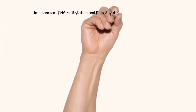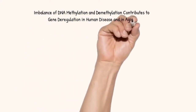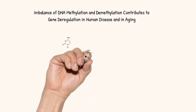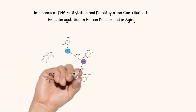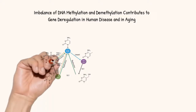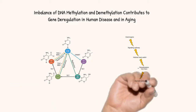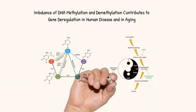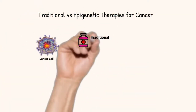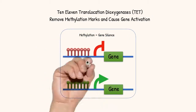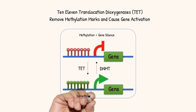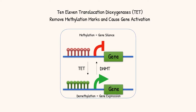DNA methylation patterns in cells are regulated by the opposing activities of DNA methyltransferases, which introduce the methyl groups on cytosine, and TET2, which removes the methylation marks. These methylation patterns are quite stable in healthy cells but can be deregulated in many human diseases, including cancer, inflammatory diseases such as asthma, and neurological conditions. Traditional anti-cancer therapies work by killing cancer cells; however, any cancer cells that survive treatment can develop resistance. Unlike permanent genetic mutations, epigenetic marks are reversible, and therefore the epigenomes of cancer cells can be reprogrammed to behave more like normal cells, and epigenetic errors can be corrected with proper therapies.